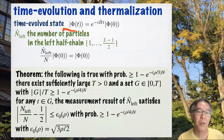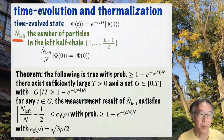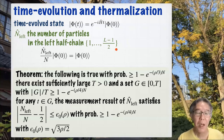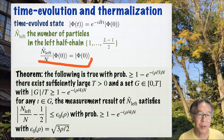Then we consider just the standard time evolution by means of this Hamiltonian. We focus on the observable N_left, which is the total number of particles in the left half chain. In the initial non-equilibrium state, we had all the particles in the left half chain.